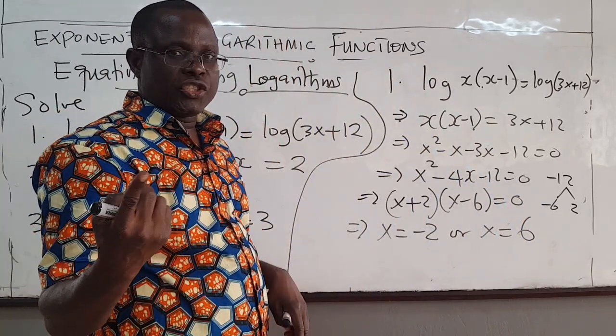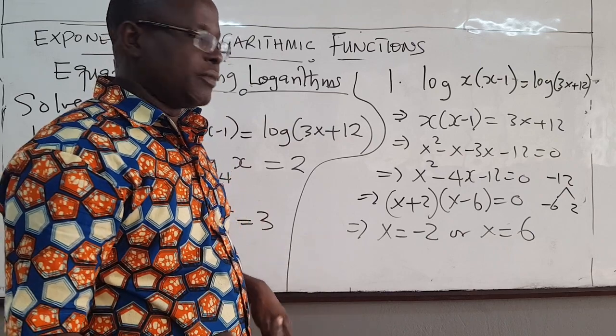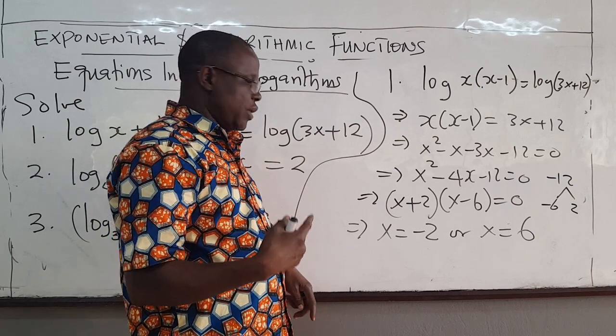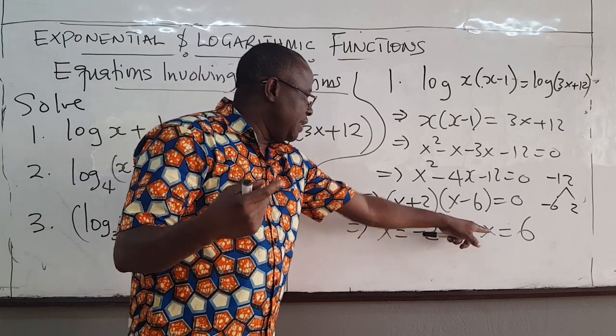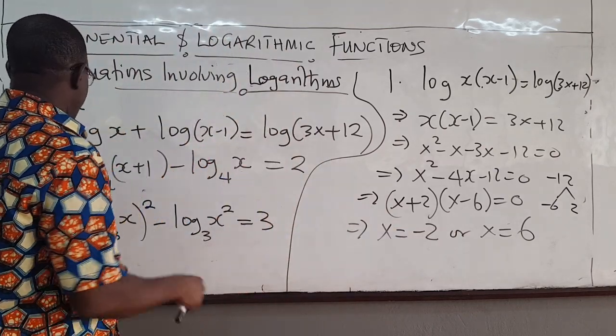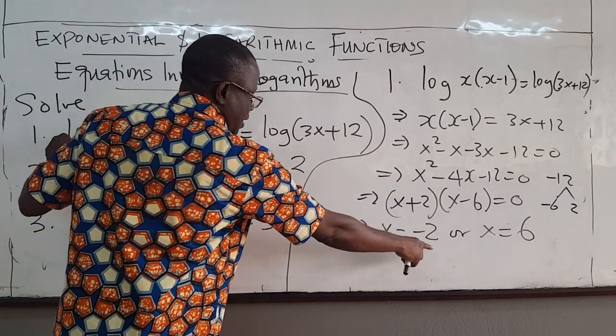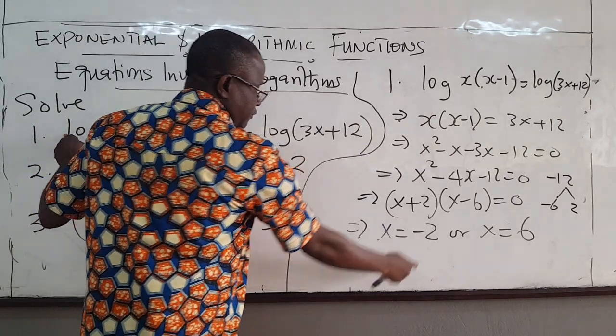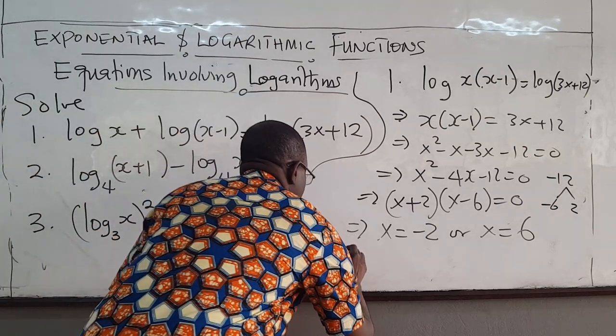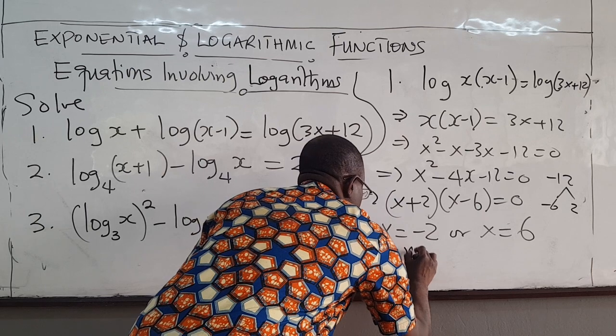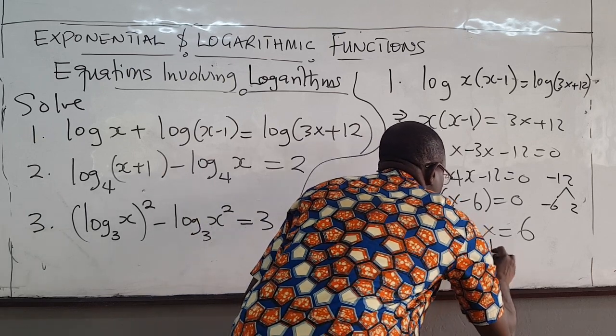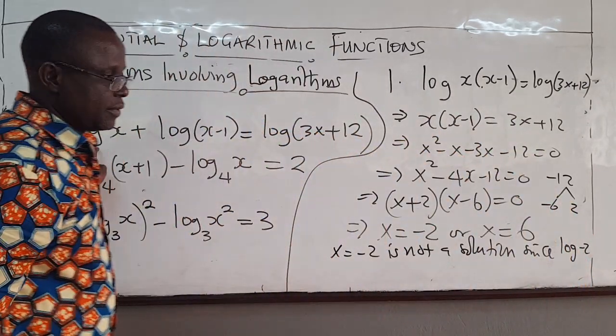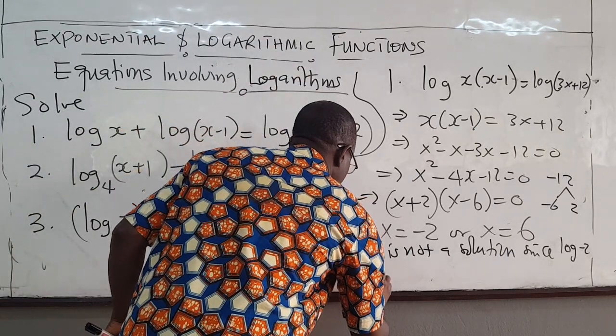Now you always have to check this. Remember when we introduced the logarithm, we said that the argument must always be positive. So you go back to the original equation to ensure that if you put any of these, that is satisfied. Notice that if you come back to the original equation, x equals negative 2 will give you log of negative 2, which is not defined. So x equals negative 2 can't be a solution, since log of negative 2 is not defined.